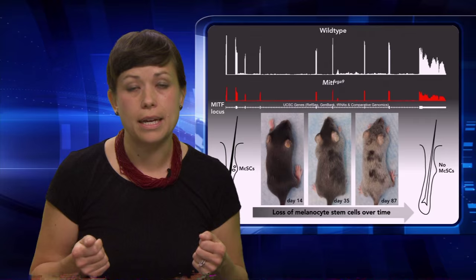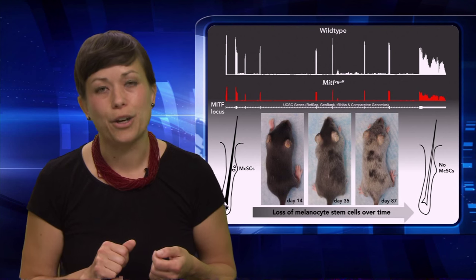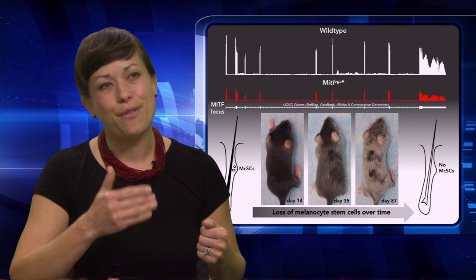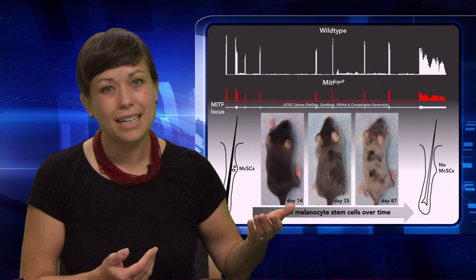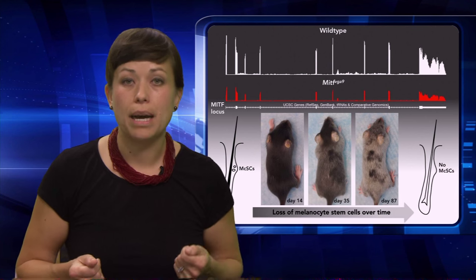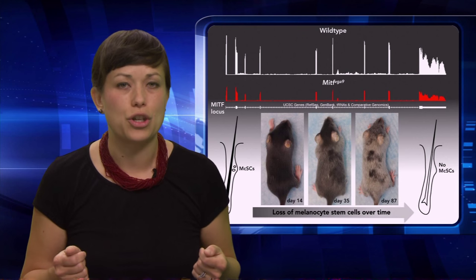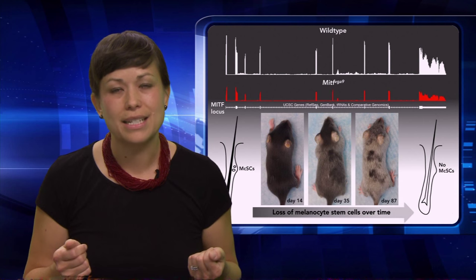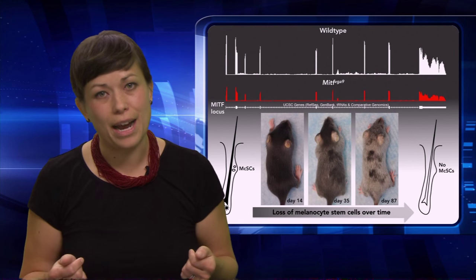Let me give you an example of where we've been successful. One genetic modifier of hair graying is haploinsufficiency for the transcription factor MITF. If we take mice already predisposed for hair graying and reduce their MITF levels by half — diagrammed in the RNA-seq reads at the top, where wild type is in white and haploinsufficiency for MITF is in red — what we find is that these mice are born black and acutely go gray over time, as shown in the timeline. Even more interesting, when we isolate melanocyte stem cells from wild type and MITF haploinsufficient mice, we find that as MITF decreases, we get upregulation of interferon-stimulated genes. This is exciting because it points to a novel interaction between innate immunity and melanocyte stem cell maintenance.